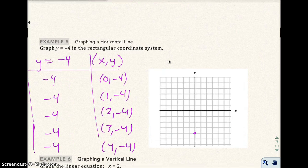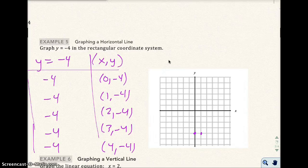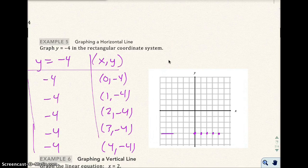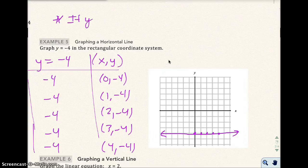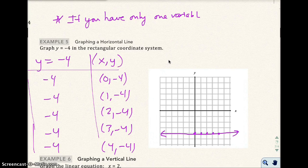What happens if I plot those points? Here's (0, -4), (1, -4), (2, -4), (3, -4), (4, -4). I would get a horizontal line. Okay. So my hint sheet is if you have only one variable, that's a little hint. And I'll fill that out in a second.